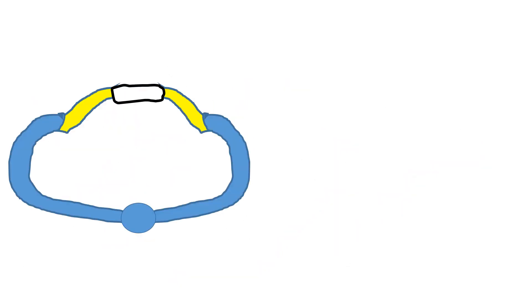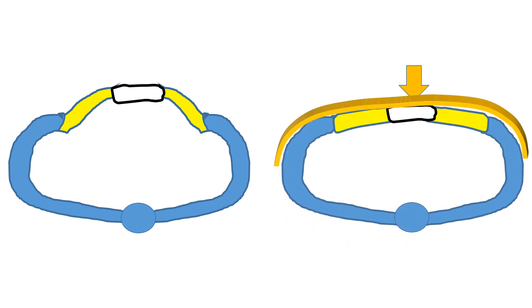The dynamic principle in the correction of pigeon chest is explained again. The chest wall is pressed downward. The cartilage bends and the protrusion is corrected. The correct shape is maintained by a metal bar.